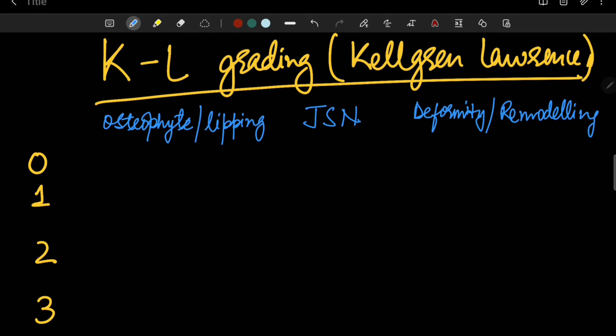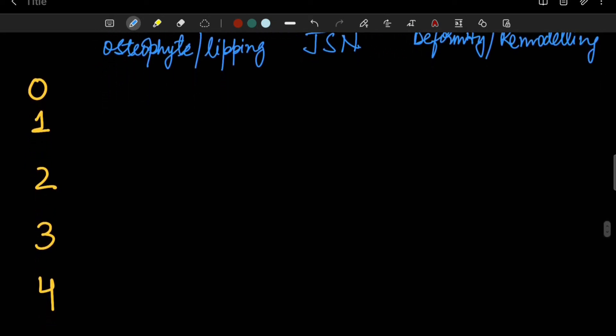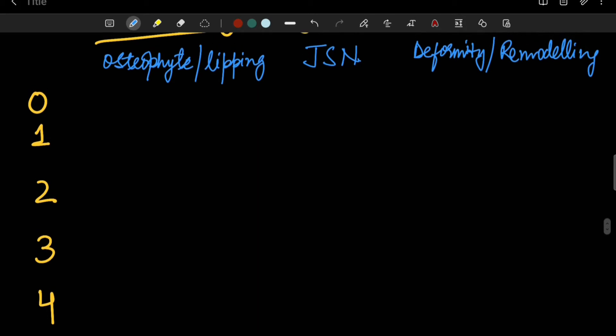What are the components of this KL grading and how to remember it efficiently? The basic parameters used in this grading are the presence of osteophytes, the presence of joint space narrowing, and the presence of any remodeling or deformity.